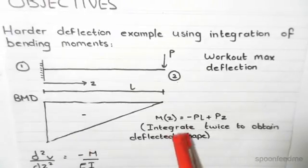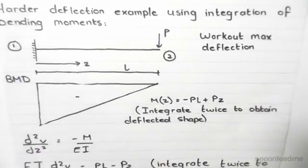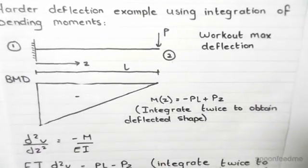We're given this moment which is M(z) = -PL + Pz. So how do we work out the deflections?